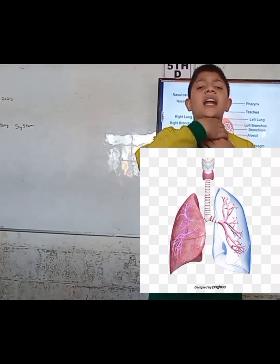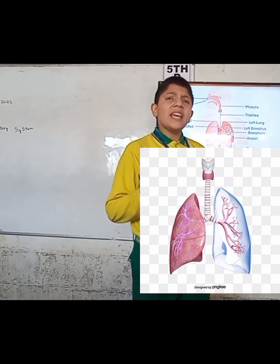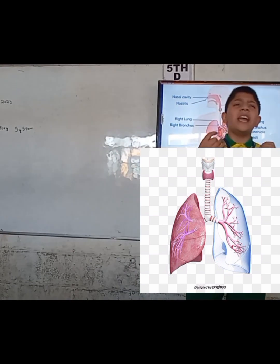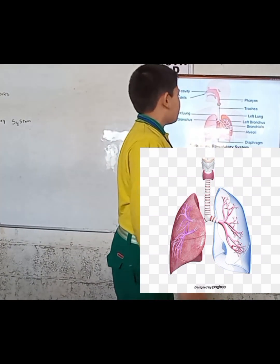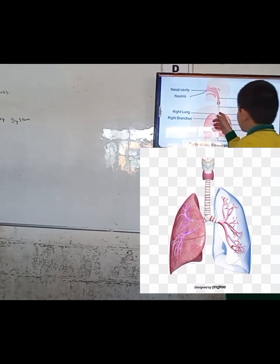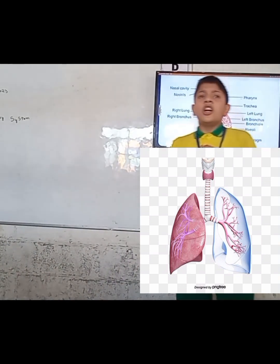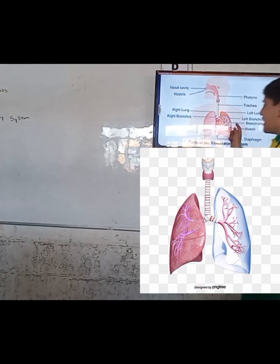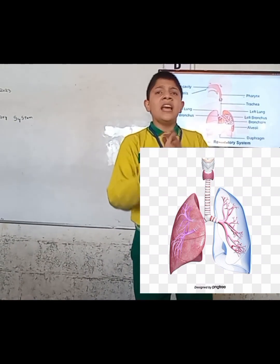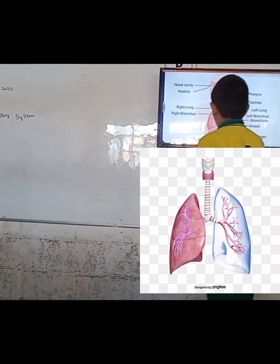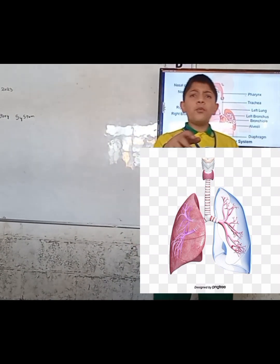After that is the trachea. The trachea is a tube-like structure also known as the windpipe. This windpipe supplies air into two bronchi, which then enter into the two lungs.